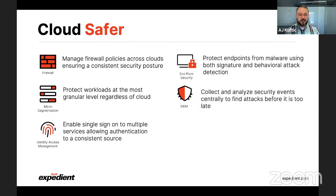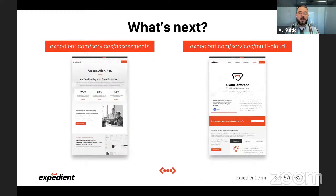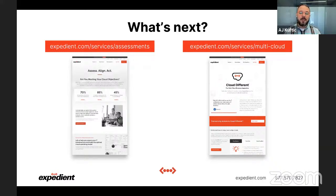This is all part of our Cloud Safer mentality — protecting workloads regardless of location with firewall, micro-seg, SIEM, identity, and endpoint security, providing a holistic security platform with an intent-based model across all workload locations. You can go to expedient.com/services/assessments for a free cloud assessment. We also do DR assessments — we'll sit down and go through your disaster recovery plan, understand your pain points, and help make it better. Both are free. You can also go to expedient.com/services/multi-cloud to see how we can accelerate your cloud journey.